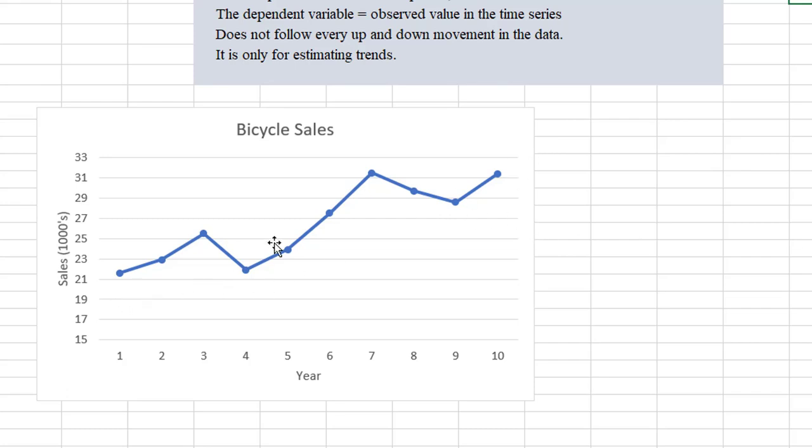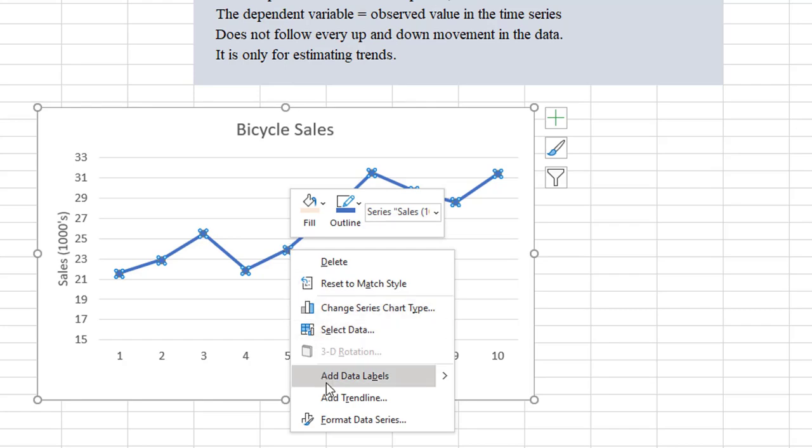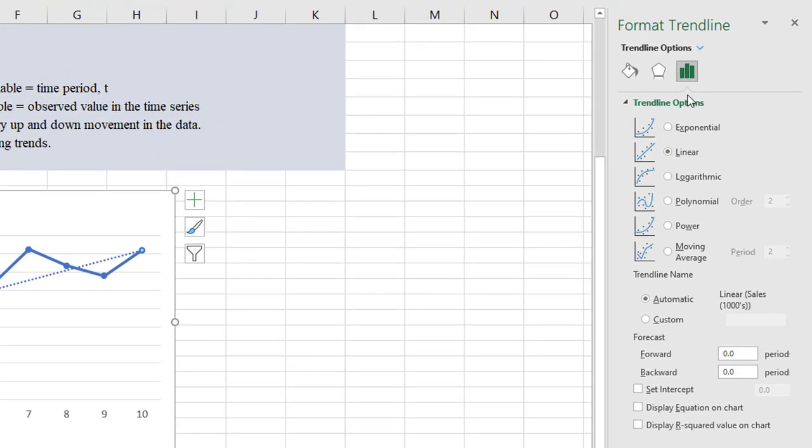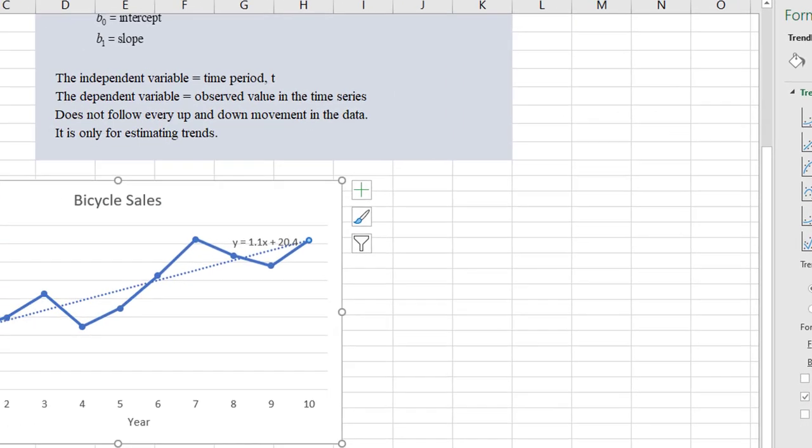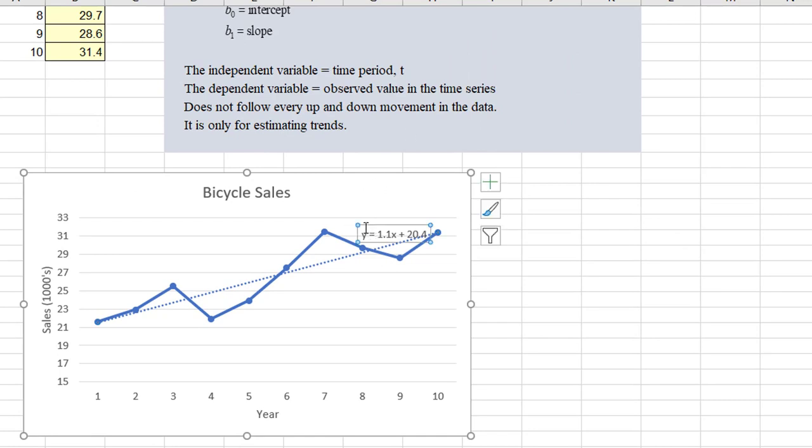This is a line chart, not a scatter chart, but we could still insert a trend line just the way we did with a scatter chart. So click on one of these points and then right click and add trend line. Go to linear, display equation on chart. There's the equation.